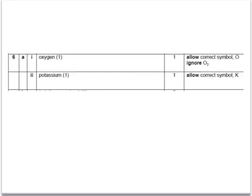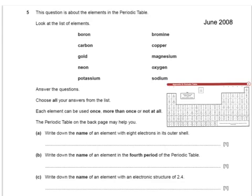They'll allow the correct symbol as well, but since they asked for the name we've given the name. Here's a very similar question about elements in the periodic table. We have to write down the name of an element with 8 electrons in its outer shell. If it's got 8 electrons in the outer shell it must be in group 0 with a full shell, except it can't be helium. So we look for one of the given elements — and that's neon. Neon is in group 0 with a full outer shell.